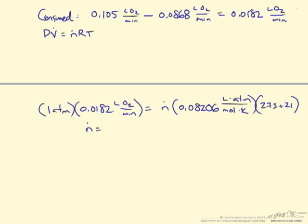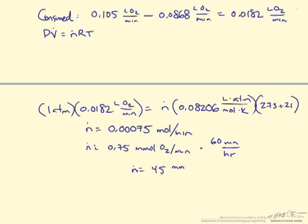Solving this equation will give us N, which is 0.00075 moles per minute. The question wants it in millimoles, so an easy conversion, dividing by 1000 would give us 0.75 millimoles oxygen per minute. And then we have to convert this to an hour. So we can go ahead and multiply that by 60 minutes per hour, so that our flow rate will be 45 millimoles oxygen per hour.